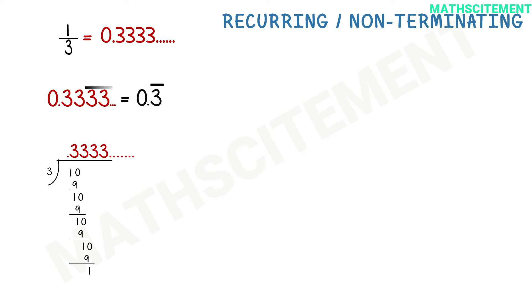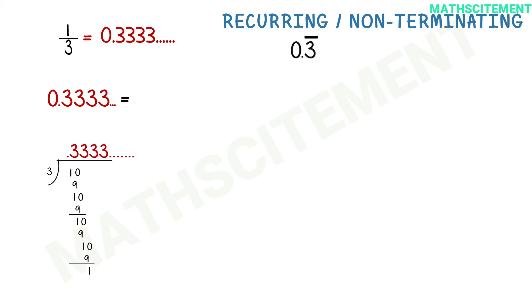In this case, the digit 3 repeats itself, so we express it with a bar placed on the repeating digit 3. The repeating digit is written only once with a bar on it. Let's take another example: 5 by 6.